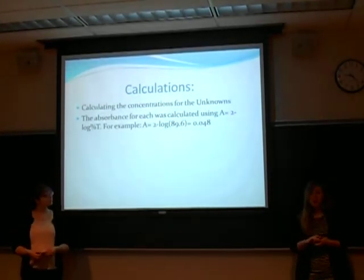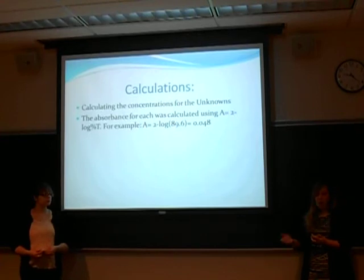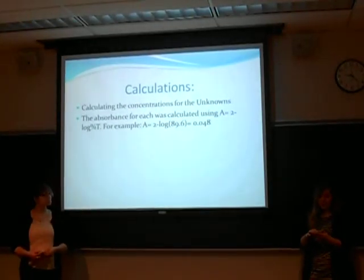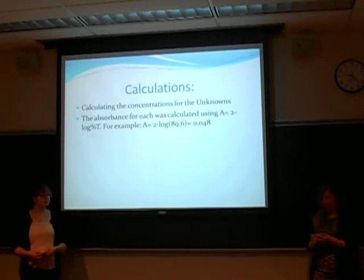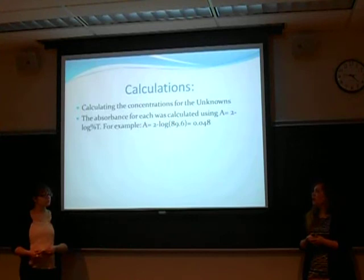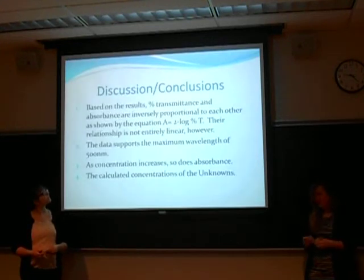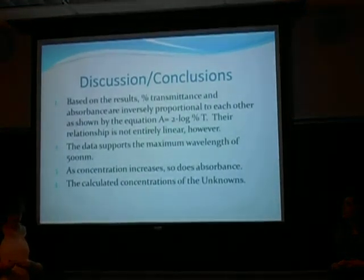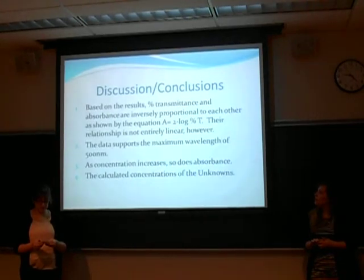The spectrophotometers that we used gave us a value for absorbance. It can also be calculated from the formula A equals 2 minus log of the percent transmittance. One example from the data set is A equals 2 minus log of 89.6, which is equal to 0.048 for absorbance. Based on the results, the percent transmittance and absorbance are inversely proportional to each other, as shown by this equation.